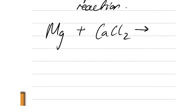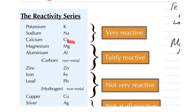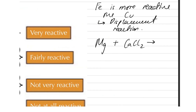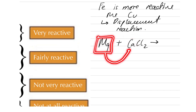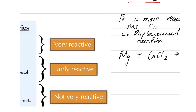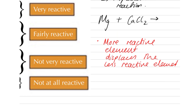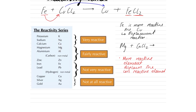So, let's check whether this reaction is feasible. We have magnesium plus calcium chloride. Is magnesium more or less reactive than calcium? Well, magnesium is up here, but calcium is up here — so which is more reactive? Calcium is more reactive. So, if calcium is more reactive, can magnesium displace calcium? No, it can't — because the more reactive element displaces the less reactive element. Magnesium is less reactive than calcium, so this reaction does not happen. Not possible.